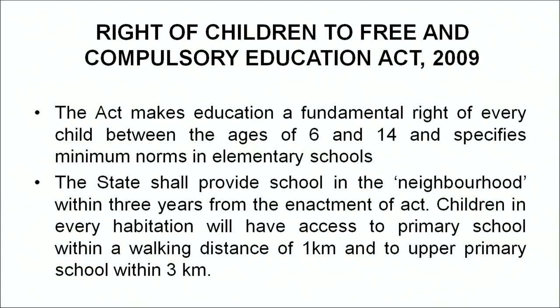Let us look into the Right of Children to Free and Compulsory Education Act 2009. The act makes education a fundamental right of every child between the ages of 6 and 14, and specifies minimum norms in elementary schools. Two important factors: first, it was implemented for achieving universalization of elementary education — providing free and compulsory education to children of 6 to 14 years. At the same time, it ensures certain minimum essential quality norms in elementary schools.